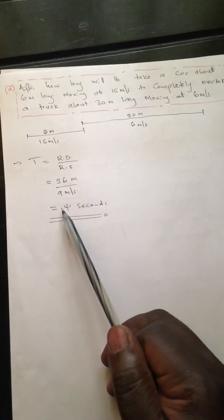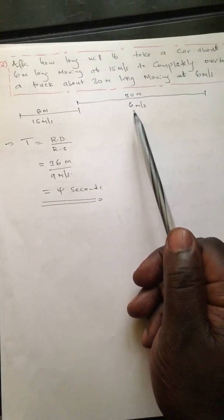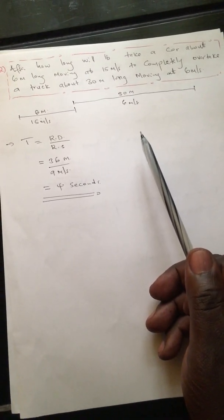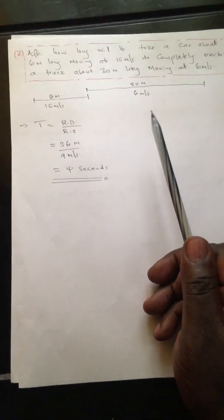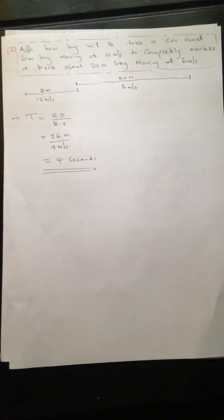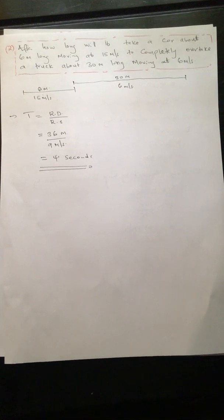Working this out: 36 divided by 9 gives 4 seconds. If the distances were in kilometers per hour instead, you would first find the relative distance, then convert the speed to meters per second, and proceed with the working. This covers the basic things you need to know about relative speed. In the next video, I'll discuss questions that appear in exams but don't strictly require relative speed, and I'll explain why. Thank you.